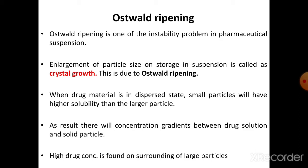Upon long duration of storage of a pharmaceutical suspension, the solid particles tend towards one another and form bigger particles — one molecule goes on top of another molecule to form bigger molecules. Therefore, the particle size increases, which creates a stability problem, making it a totally unstable suspension. This phenomenon is known as Ostwald ripening — an instability problem in pharmaceutical suspension involving enlargement of particle size upon storage, also called crystal growth.